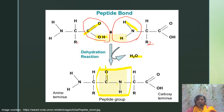To repeat: a peptide bond is formed by the reaction between the alpha carboxyl group of one amino acid with the alpha amino group of the next amino acid.